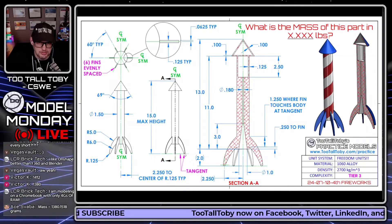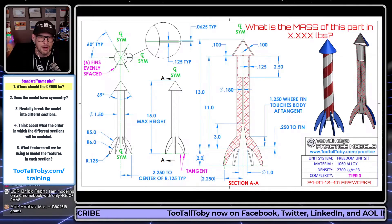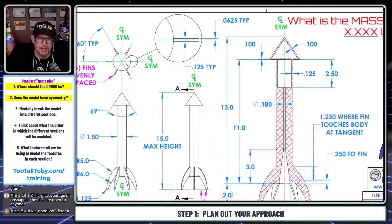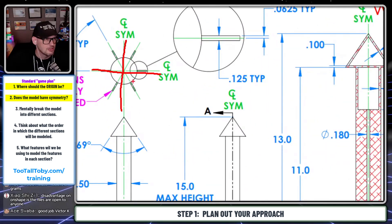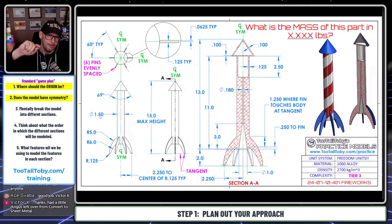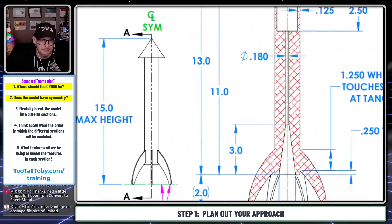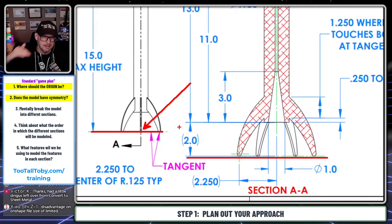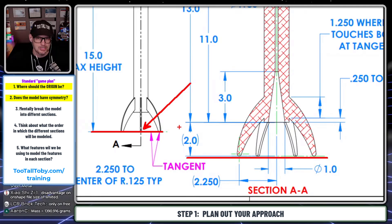Whenever you start a new 3D CAD challenge, the very first thing to ask yourself is: where is the origin going to be? Look for symmetry in the model — if there's symmetry, that helps locate the origin. In this case there's symmetry in two directions, so the origin is probably right at the center. Looking from the front, a lot of dimensions come from the base of the rocket, like the 15-inch height. So the origin will be centered looking from the top, at the base where most dimensions originate.